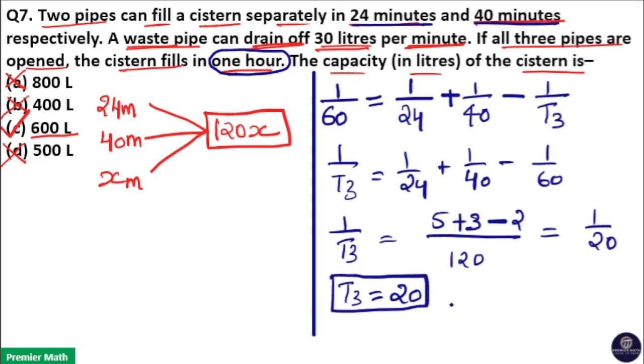That means capacity of the cistern is 20 into 30, equals 600 liters. Because in 1 minute, the third pipe drains 30 liters. This waste pipe drains 30 liters in 1 minute. So in 20 minutes, it will drain 600 liters.